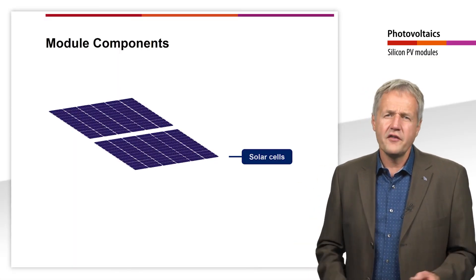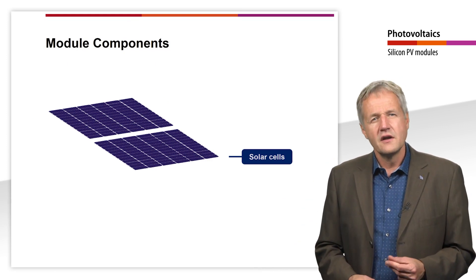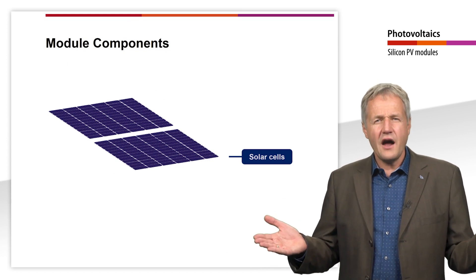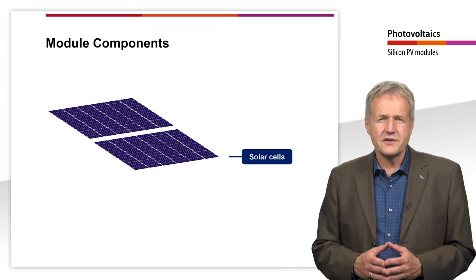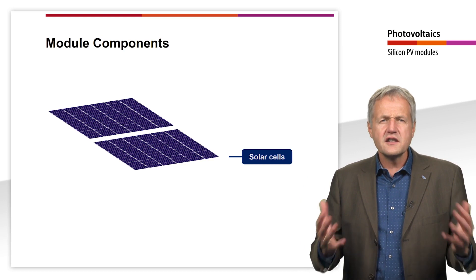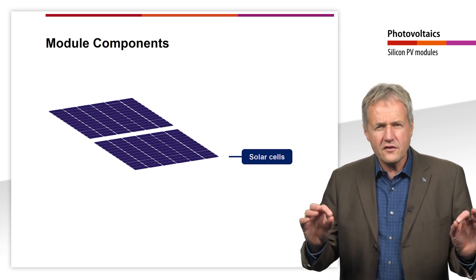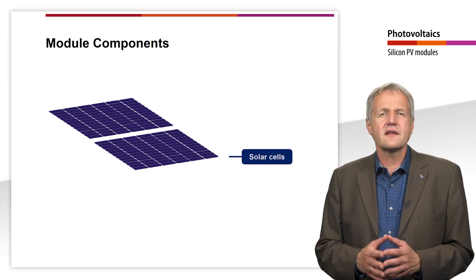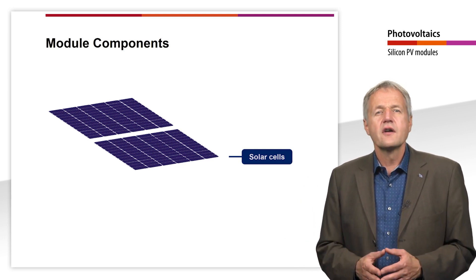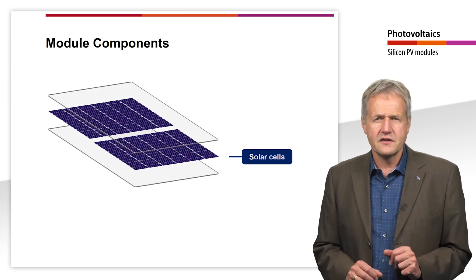Let's have a look at the composition of a typical crystalline silicon module. Since the cells are very thin, the cell strings are not very resistant to mechanical stress. In addition, the cell connectors and the contact strips on the solar cells are sensitive to moisture. Therefore, the cell strings are embedded in two films of encapsulant.